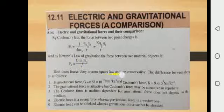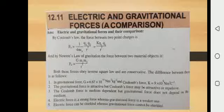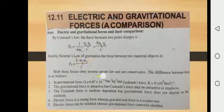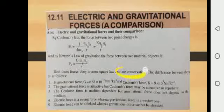Both these forces obey the inverse square law, as in both denominators there is R². Electric force is directly proportional to 1/R², and gravitational force is also proportional to 1/R². That is, both are inversely proportional to R². Here R means distance between two charges, or distance between two masses. So both forces obey the inverse square law and are known as conservative forces.